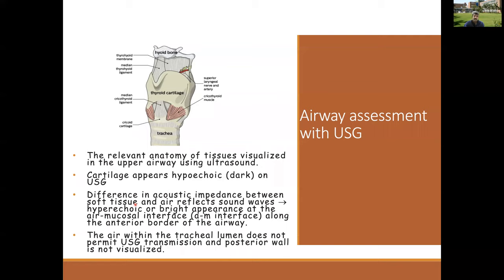Here comes the role of ultrasound — it is like a stethoscope for all of us now. Ultrasound can help us do a dynamic assessment of the airway. It exploits the difference in acoustic impedance between soft tissues and air, reflects sound waves at the air-mucosal interface, and allows assessment of airway structures.